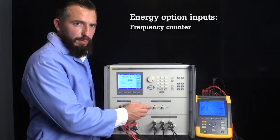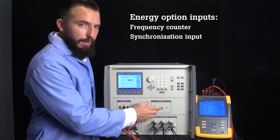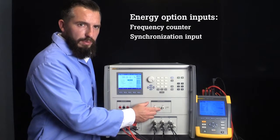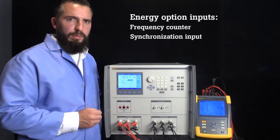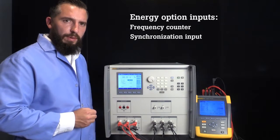There is also a synchronization input that allows the 6003A's outputs and dips and swells to be synchronized with an external signal. This input can also be used to synchronize other power or energy standards like the Fluke Calibration 6105A to create a four-phase system.